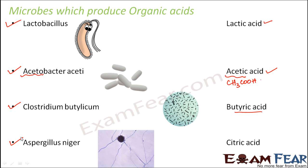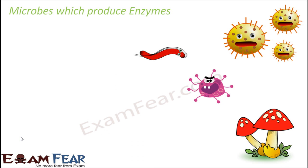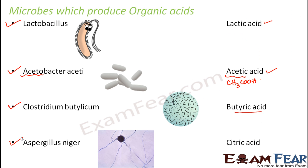Aspergillus niger produces citric acid. Citric acid is useful and is the same acid also present in lemons. So all these different acids are produced by different microbes, and these acids find their application in many different places.